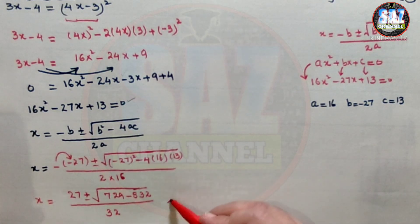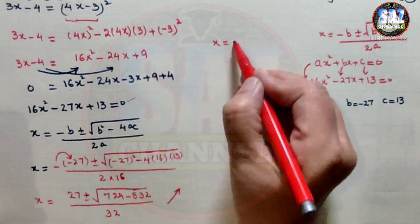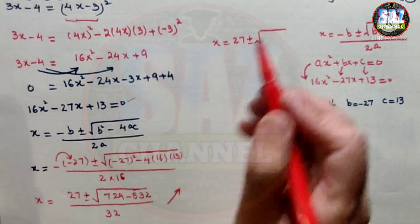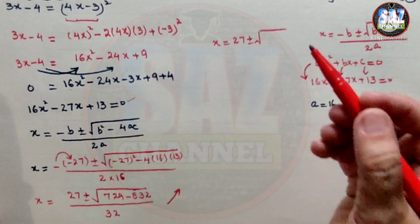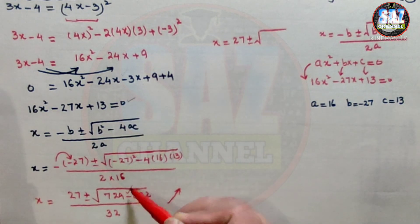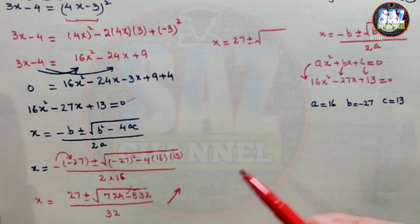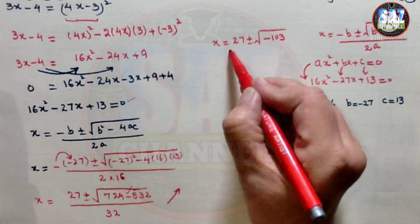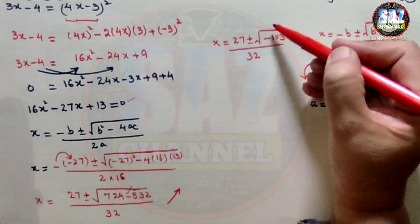Moving to the top of the page, the equation takes the form x equals 27 plus or minus the square root of minus 103, divided by 32. Notice clearly that 832 is greater than 729, giving us a negative value under the radical sign, which is minus 103.